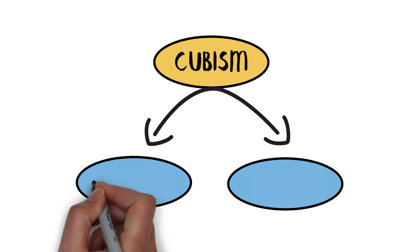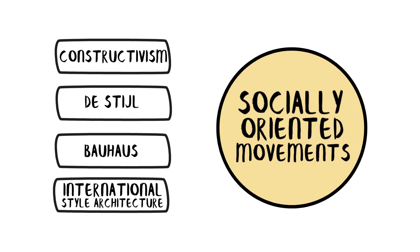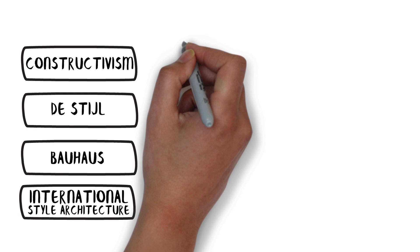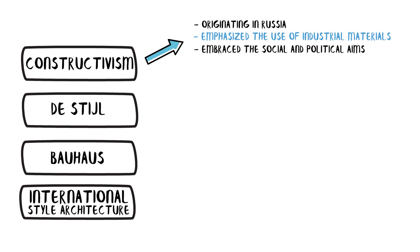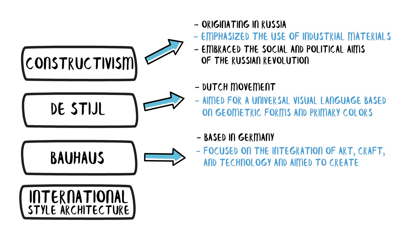Constructivism, De Stijl, Bauhaus, and international-style architecture were all socially-oriented movements that sought to integrate art, design, and architecture into the fabric of society. Constructivism, originating in Russia, emphasized the use of industrial materials and embraced the social and political aims of the Russian Revolution. De Stijl, a Dutch movement, aimed for a universal visual language based on geometric forms and primary colors. The Bauhaus in Germany focused on the integration of art, craft, and technology and aimed to create functional and aesthetically pleasing designs for mass production.